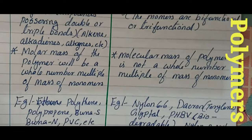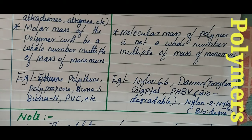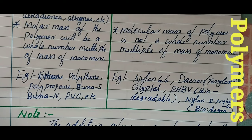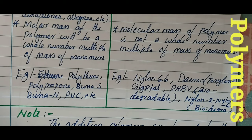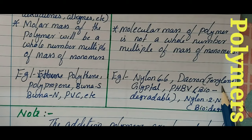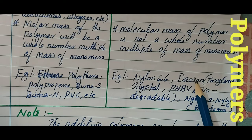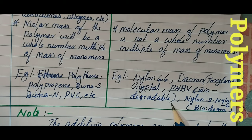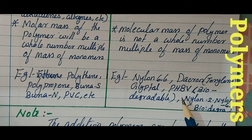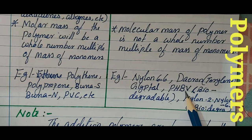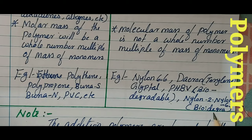Examples of addition polymers include polythene, polypropene, Buna-S, Buna-N, and PVC. Examples of condensation polymers include Nylon-6,6; Dacron (also called Terylene), which is a polyester; Glyptal; PHBV, a biodegradable polymer; and Nylon-2-Nylon-6, also a biodegradable polymer.